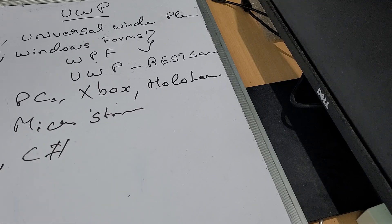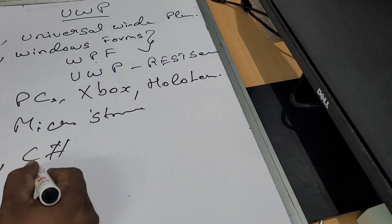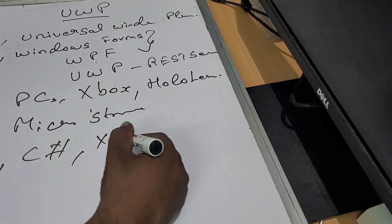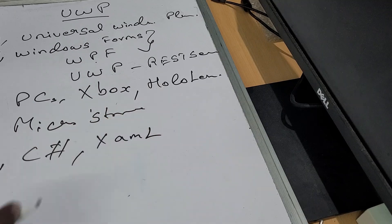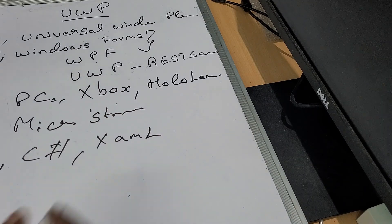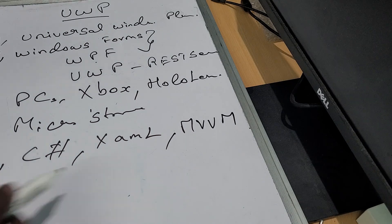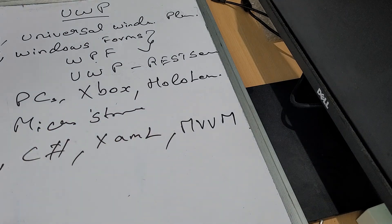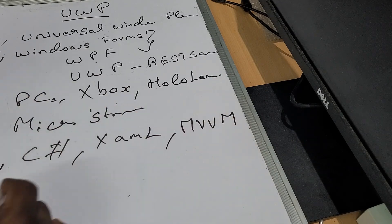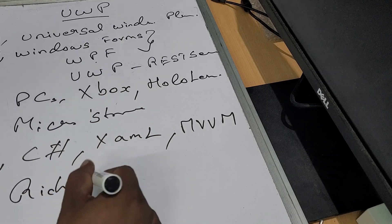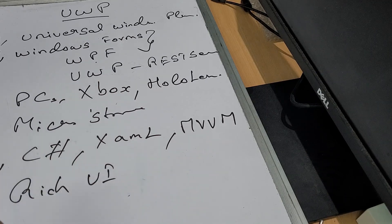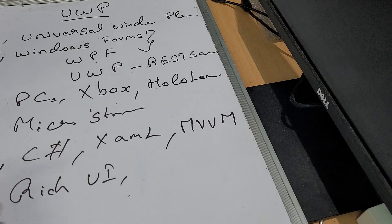For UWP development, you use C# for coding and XAML for design on the frontend. You can use MVVM architecture — just as WPF also uses MVVM architecture, UWP supports MVVM architecture and provides a rich UI design experience.